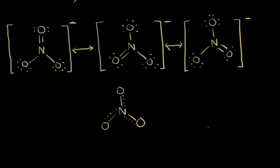One way we know the ion looks more like this hybrid is because of bond length. When the ion is measured, all the nitrogen-oxygen bonds are the same length. If one of the resonance structures were the true picture, that wouldn't be the case — the double bond would be shorter than the single nitrogen-oxygen bonds. So it's actually more of a hybrid with the electrons delocalized throughout. That's the idea of resonance structures.